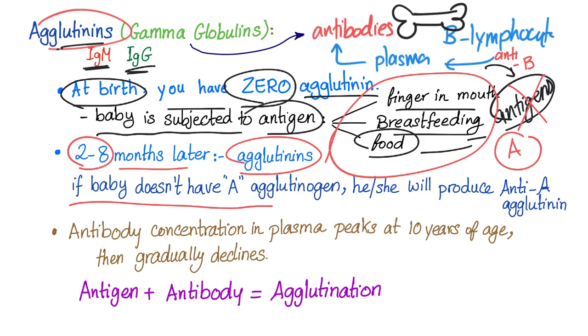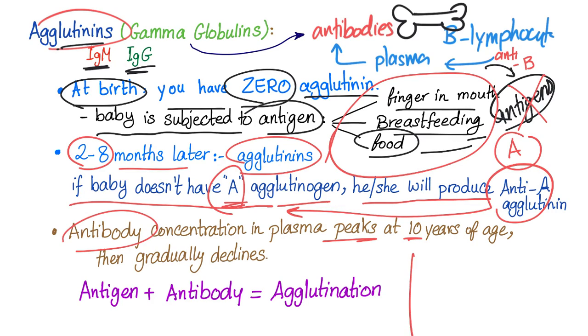If the baby doesn't have A agglutinogen, he or she will produce anti-A. If I don't have A, I will have anti-A. If I don't have B, I'll have anti-B. Antibody concentration will peak at 10 years of age, then gradually decline. Here is your timeline. You are at zero at birth, then peak at 10 years of age, then decline. Gradually decline until you die.